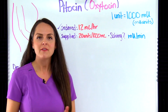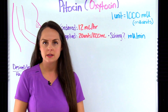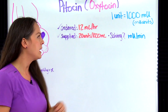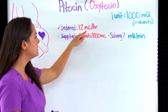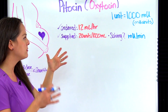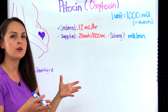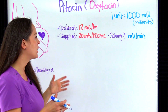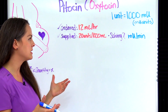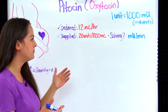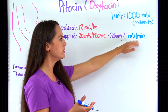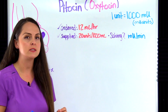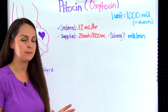Here we have a patient receiving a Pitocin infusion at a rate of 12 milliliters per hour. You're supplied with a bag that reads 20 units per 1000 mLs in lactated Ringer's solution, and you're trying to determine how many milliunits per minute this patient is receiving.